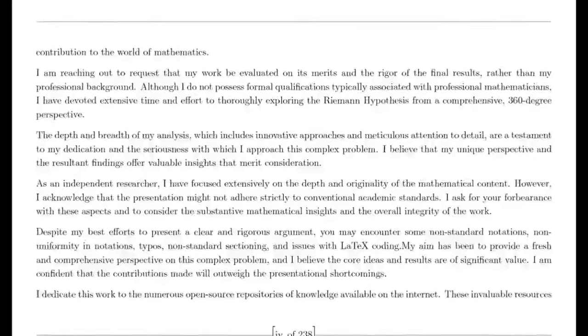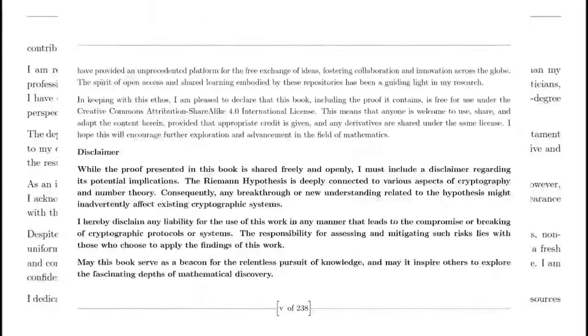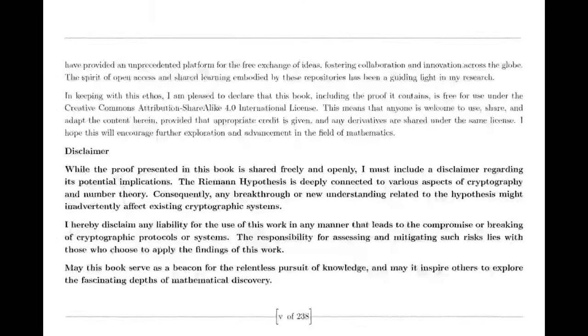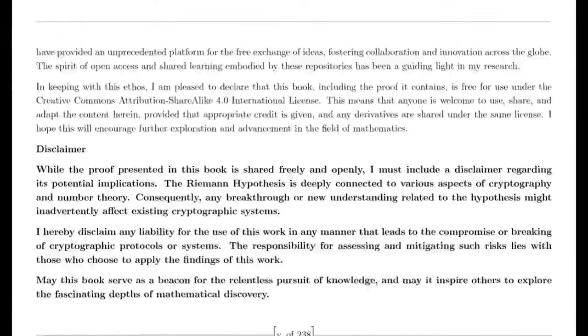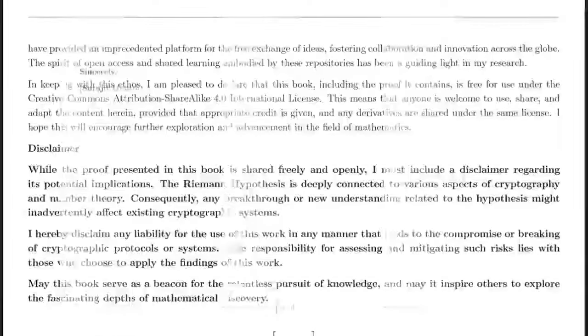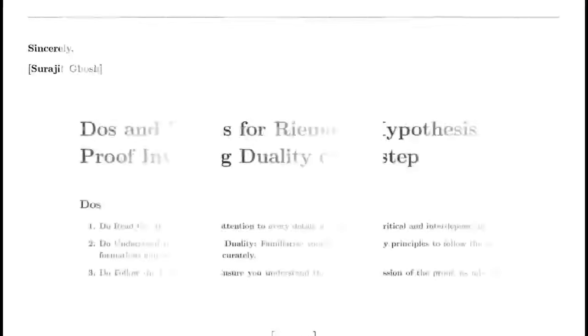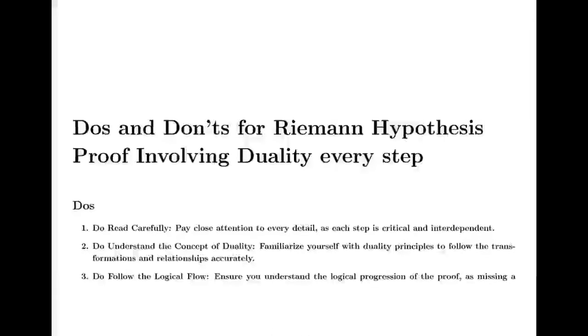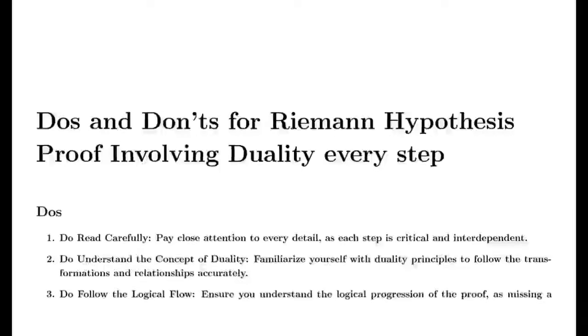Fast forward to the early 19th century, when another mathematician, Bernard Riemann, took Euler's work and breathed new life into it. In a groundbreaking paper, Riemann extended the concept beyond the realm of real numbers, daring to imagine the zeta function in the complex plane. He proposed a connection between this enigmatic function and the distribution of primes, a revelation that sent ripples through the mathematical community.